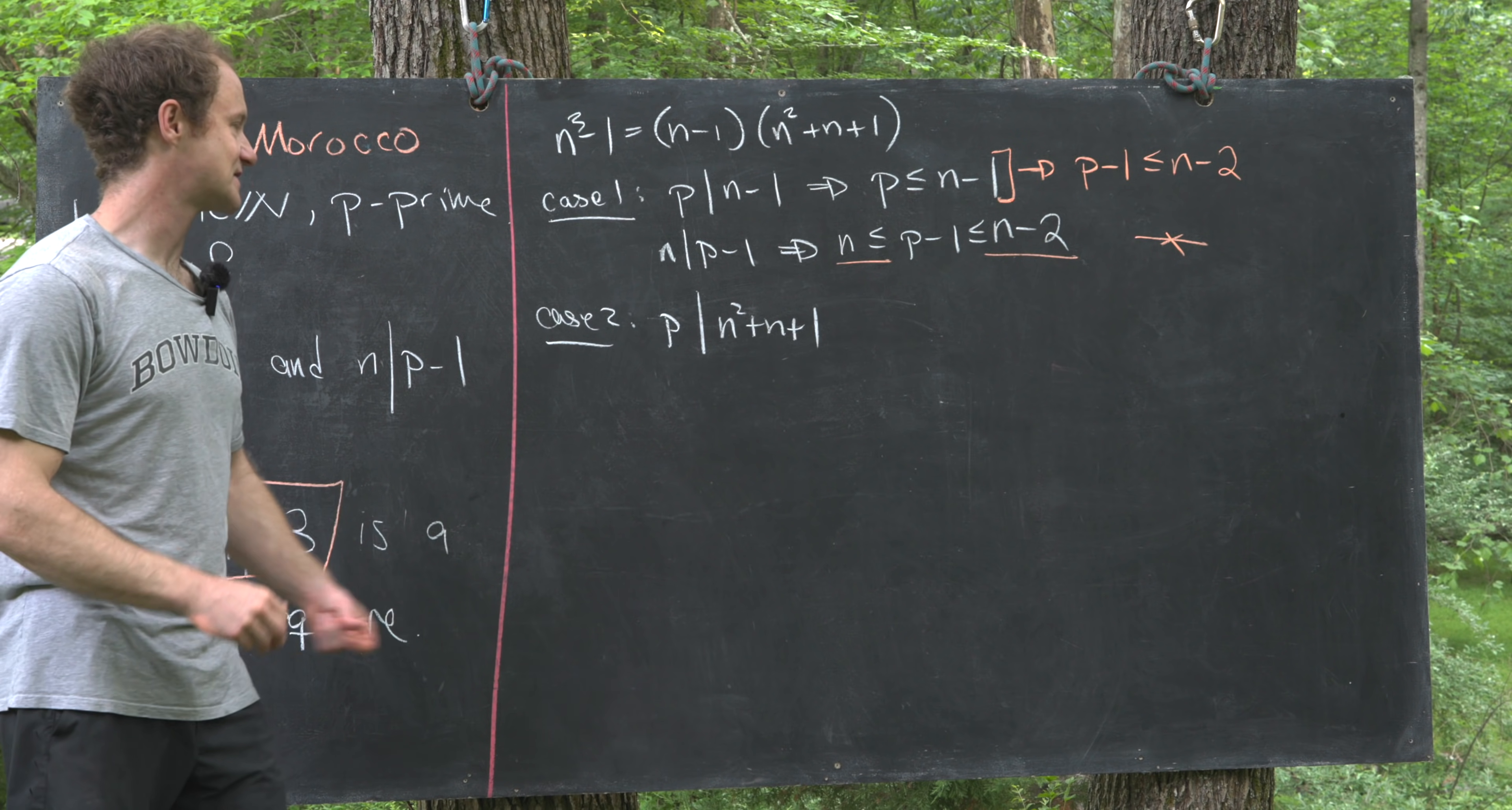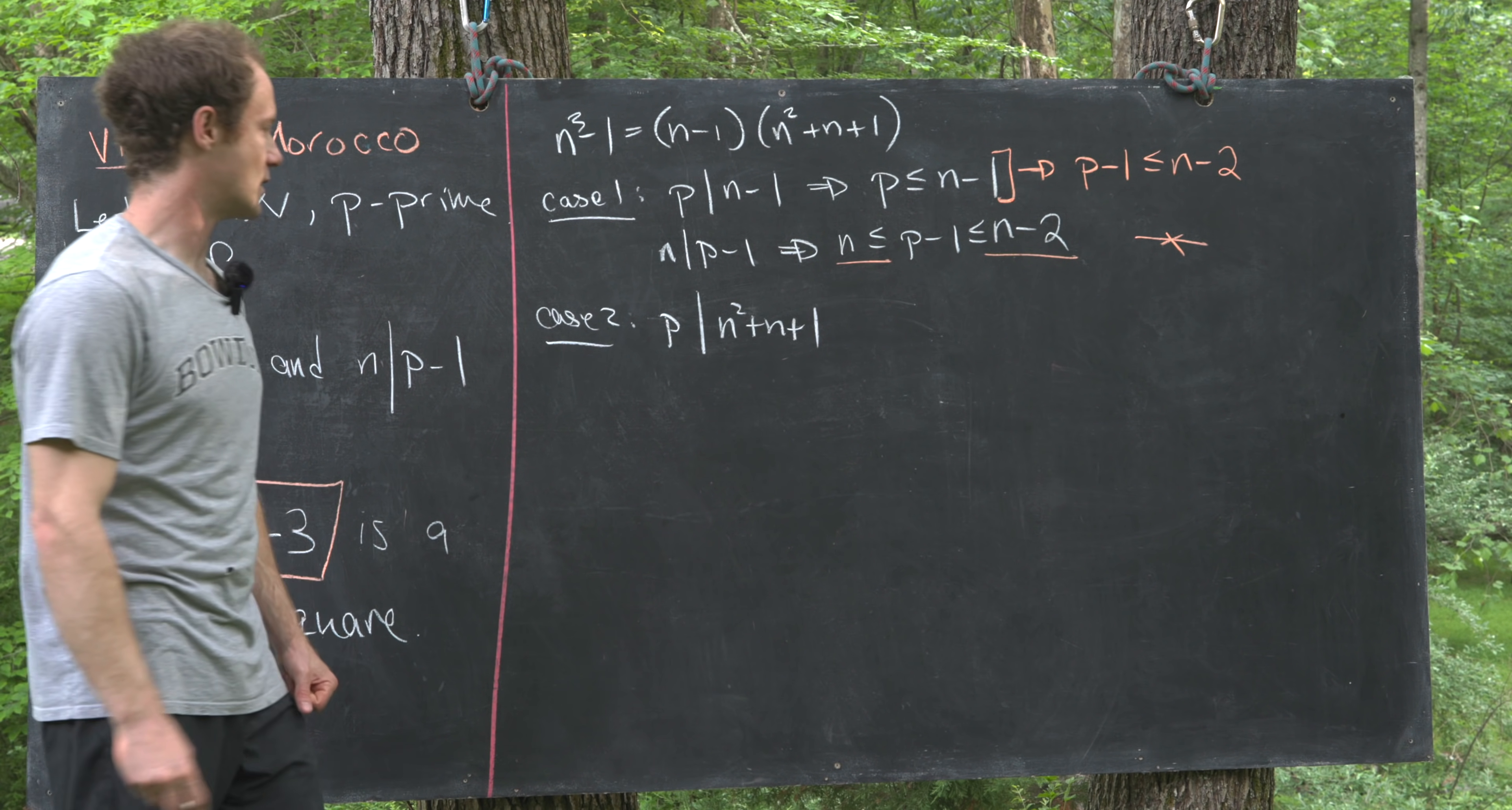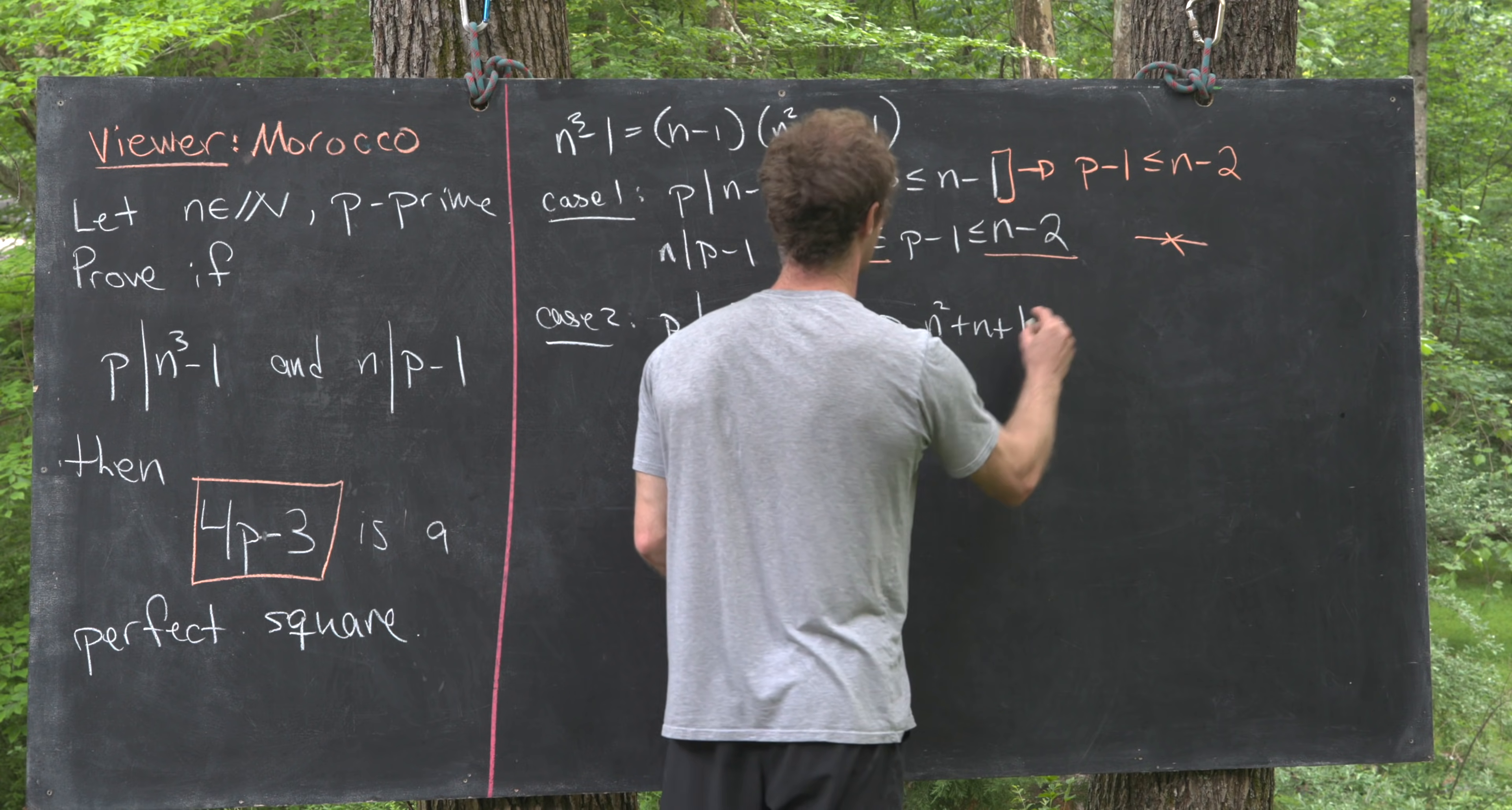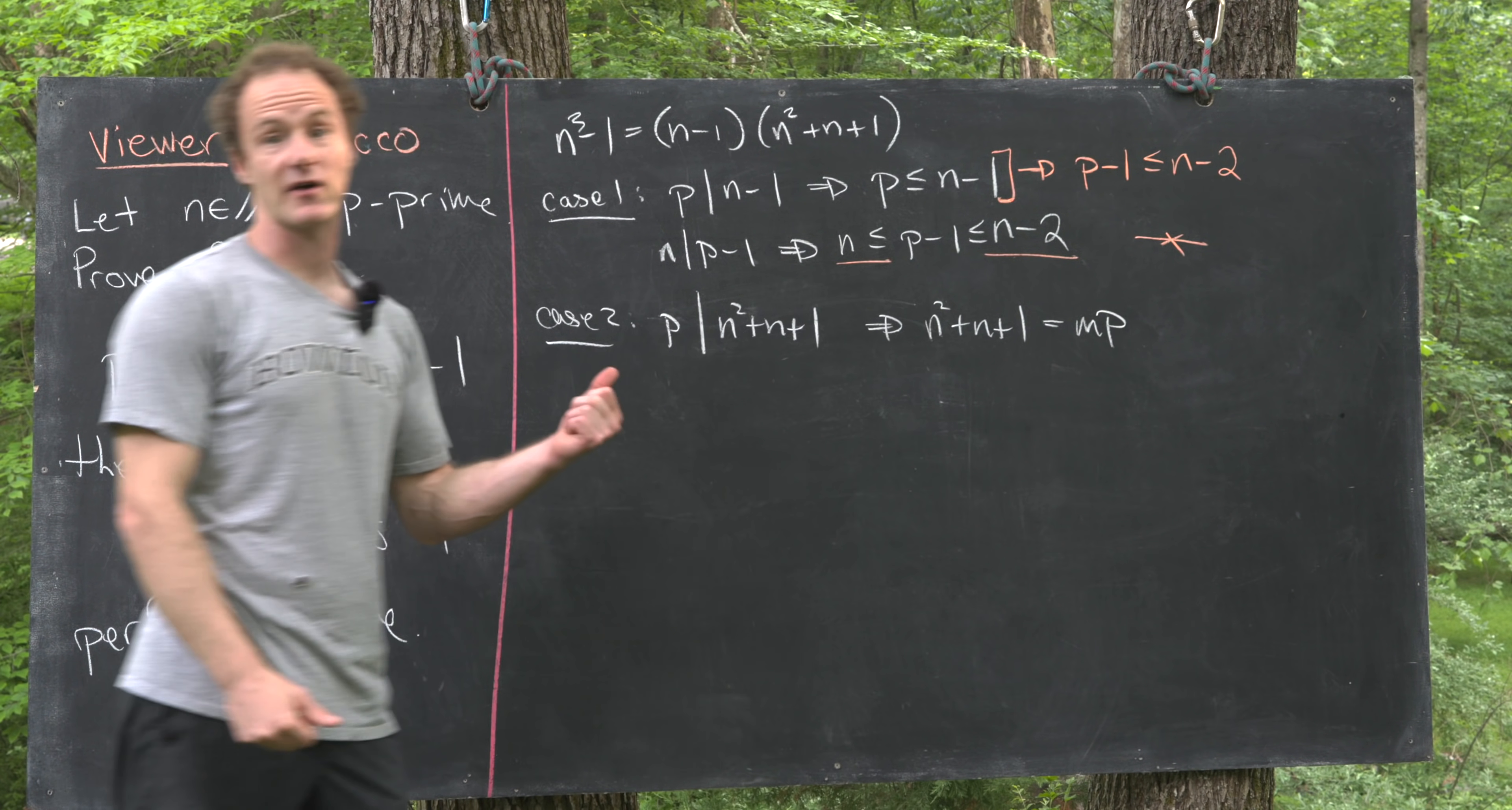So we need to work with case 2, which is p divides n²+n+1. But notice that means we can write n²+n+1 as a multiple of p. Let's call it mp for obvious reasons.